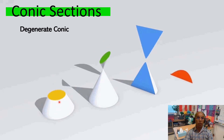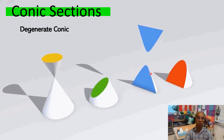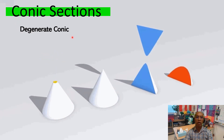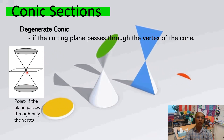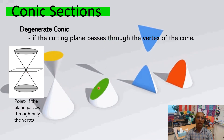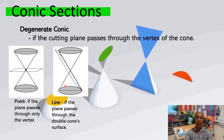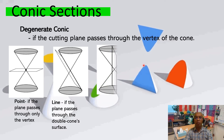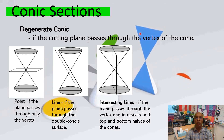When the cutting plane is parallel to the axis of the two right circular cones, it forms a hyperbola. However, there is a special case in which the cutting plane passes through the vertex of the cone — these are called degenerate conics. There are three scenarios. First, if the cutting plane is perpendicular to the axis and passes through the vertex, it will form a point. Second, if the cutting plane is not perpendicular to the axis and passes through the vertex, it will form a line. Lastly, if the cutting plane passes through the vertex and intersects both the top and bottom halves of the cone, it will form two intersecting lines.